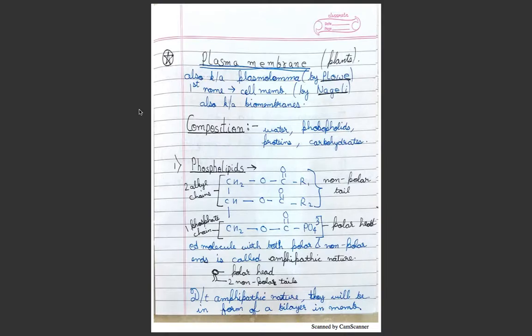Phospholipids have one alkyl chain and one phosphate chain. It is non-polar tail in an alkyl chain and polar head in phosphate chain. A molecule with both polar and non-polar ends is called amphipathic. Being of amphipathic nature with one polar head and two non-polar tails, due to this nature they will form a bilayer in membrane.